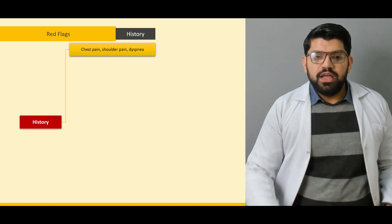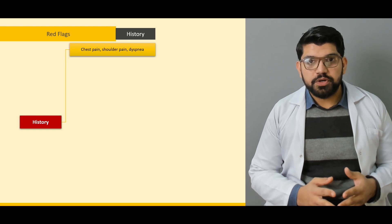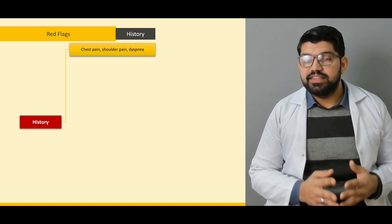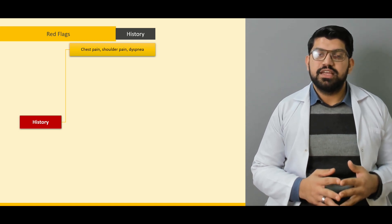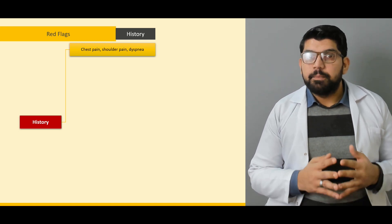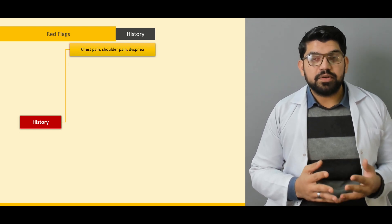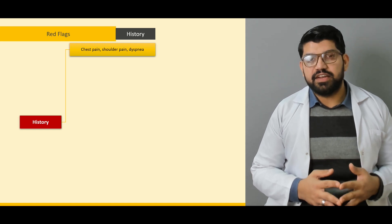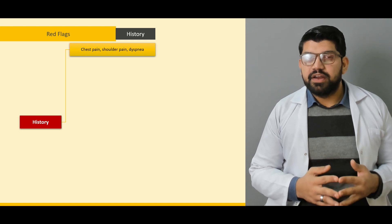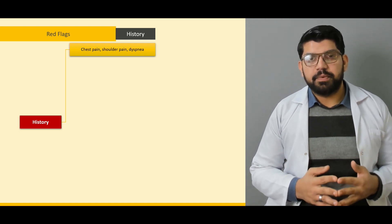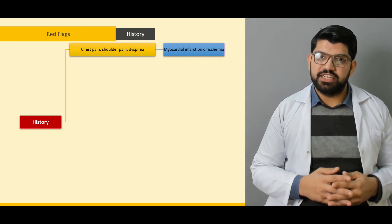Regarding history: if the patient presents with chest pain, shoulder pain, or dyspnea, these are very important and lethal red flags and warning signs. In diabetic patients, they mainly present with atypical symptoms. They cannot present with classical findings of any disease most of the time. But if a patient comes with chest pain, shoulder pain, and dyspnea, think of myocardial infarction or ischemia.